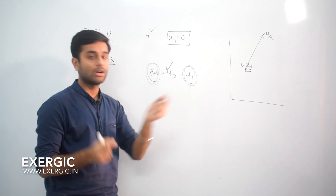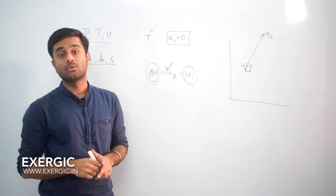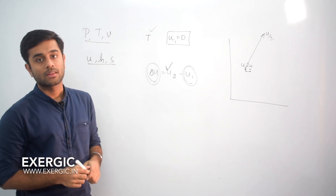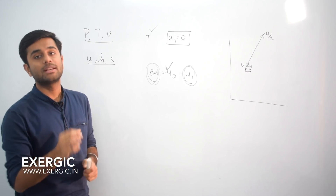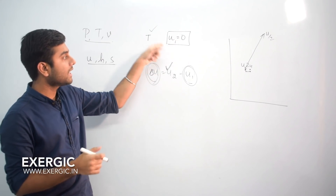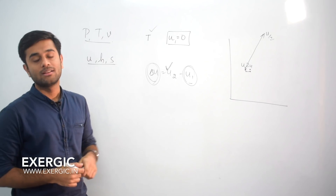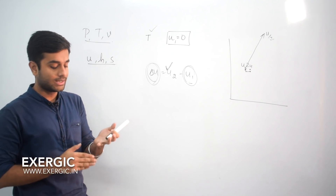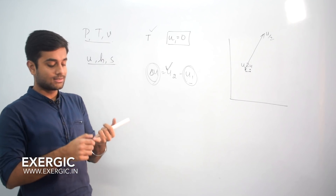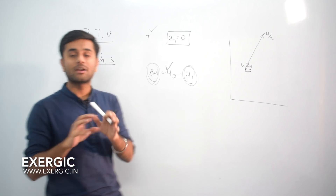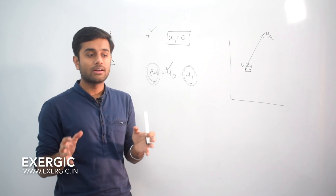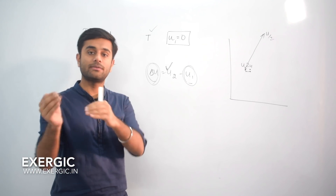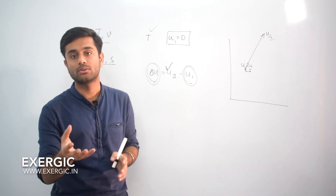Once the base is defined, you can calculate U2 — the internal energy at any other point. What value you assign, meaning at what temperature you assign U₀, H₀, or S₀, depends on the substance — whether it is water, some other liquid, or a gas. That is arbitrarily decided for different substances. Different substances will have U = 0 at different temperatures because we have assigned it to them.